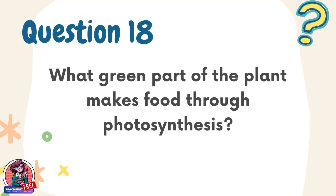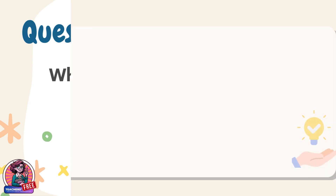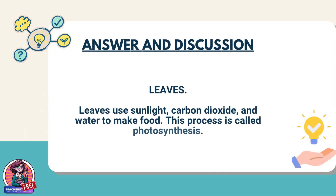Question 18. What green part of the plant makes food through photosynthesis? Answer: Leaves. Leaves use sunlight, carbon dioxide, and water to make food. This process is called photosynthesis.